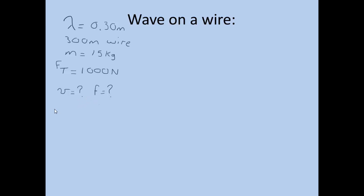We need to use the other velocity equation here. So V is equal to the square root of the force of tension over the mass per length. And we have all of those values. So we have 1,000 over 15 over 300. So we can quickly find out that the speed of the wave traveling through the wire is 140 meters per second.